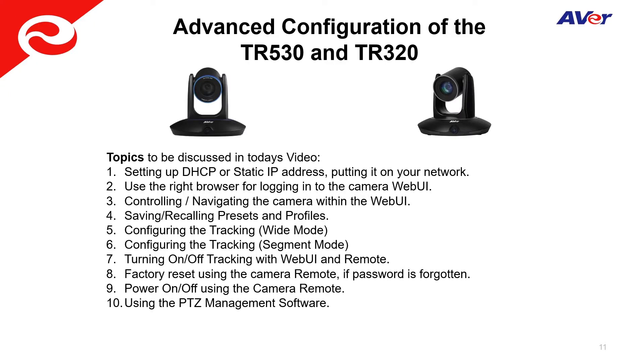Hello and congratulations with your purchase of the Aver auto tracking camera. In today's video we will take a deeper dive and discuss configuration of the TR530 and the TR320 auto tracking cameras. We will be discussing 10 different topics. The first is setting up the camera to either be DHCP or static IP addressing, putting it on your network. This is essential as you need to connect it to a network for configuration of your auto tracking or the stage and segment modes.